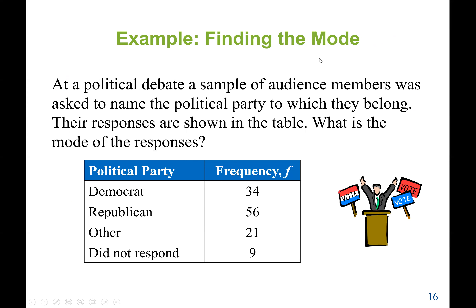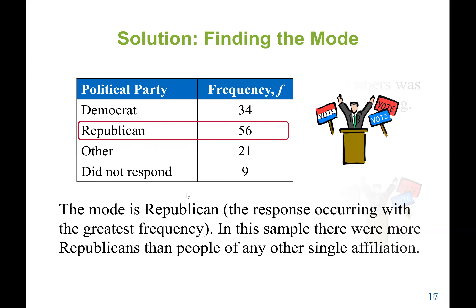Let's find the mode in another example involving a political debate. A sample of audience members was asked to name the political party to which they belong. The responses are: Democrat 34, Republican 56, Other 21, Do Not Respond 9. The mode is Republican, because that response occurs with the greatest frequency — there were more Republicans than people of any other single affiliation.